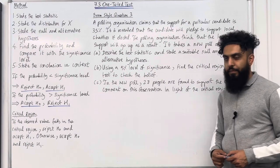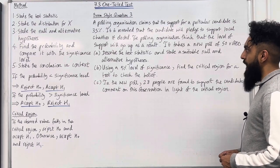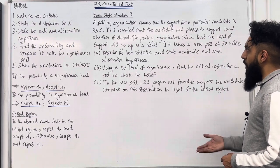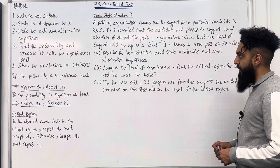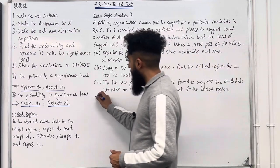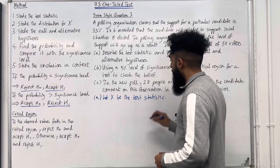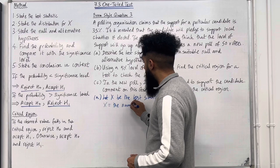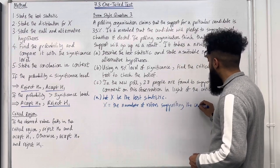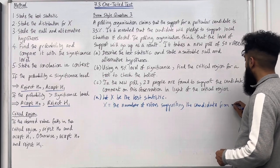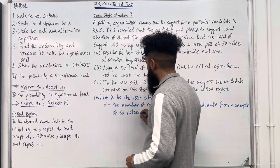Let's have a look at exam-style question 3. A polling organisation claims that the support for a particular candidate is 35%. It is revealed that the candidate will pledge to support local charities if elected. The polling organisation thinks that the level of support will go up as a result. It takes a new poll of 50 voters. Part A: describe the test statistic and state a suitable null and alternative hypothesis. Let X be the number of voters supporting the candidate from a sample of 50 voters.